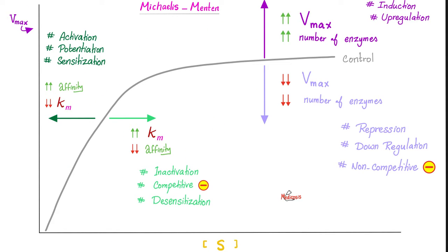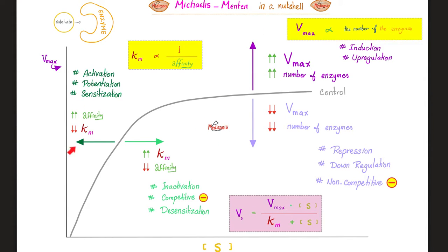You can put everything together here. Shift it upwards, you're increasing the rate. Shift it downwards, you're decreasing the rate. Shift to the left, you're lowering Km, i.e. raising the affinity. Conversely, if you shift it to the right, you're increasing Km and lowering the affinity. Induction, upregulation will increase the rate, while repression, downregulation, non-competitive inhibition will lower the rate of the reaction. Activation, potentiation, sensitization will increase the affinity and lower the Km. Inactivation, competitive inhibition and desensitization will actually lower the affinity and raise the Km. And this is how Medicosis makes history, by beautiful illustrations like this, handwritten.